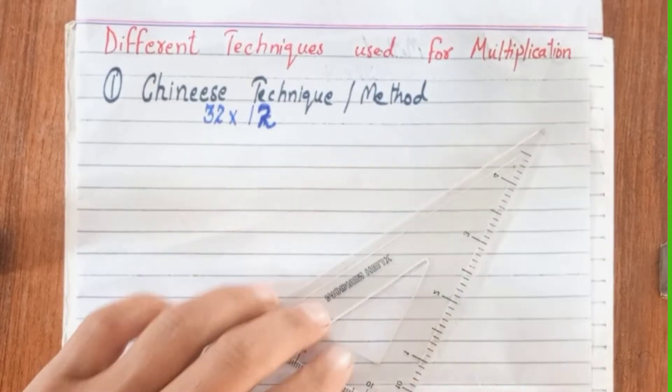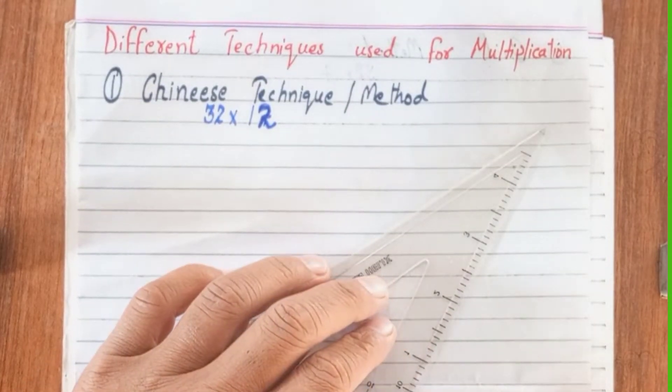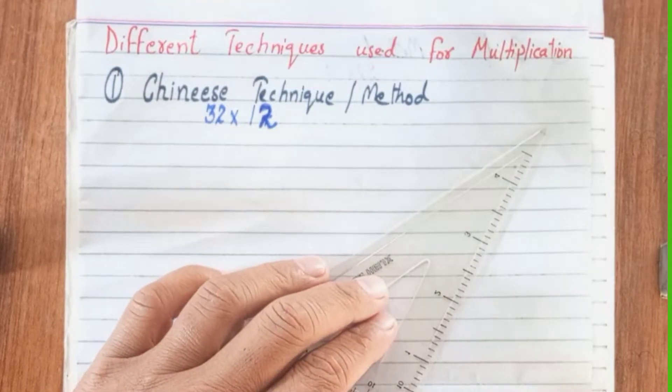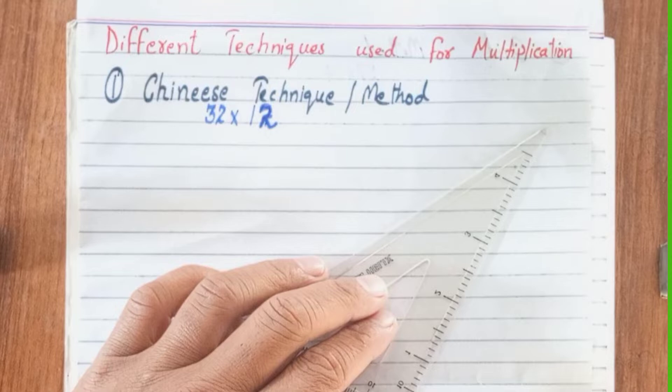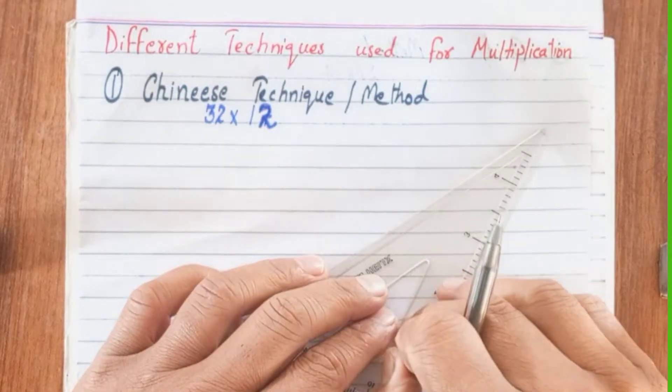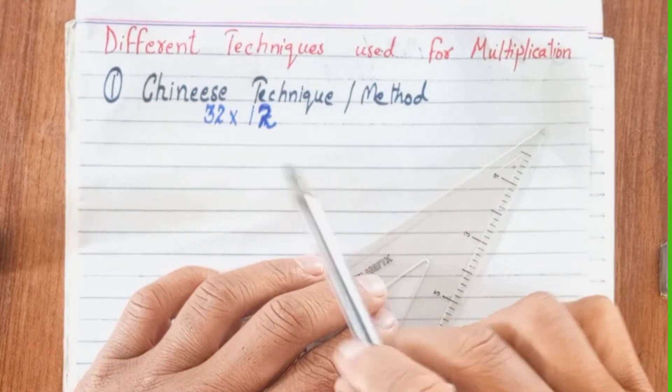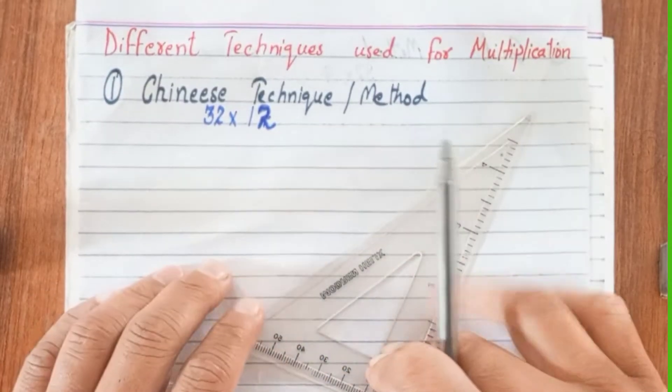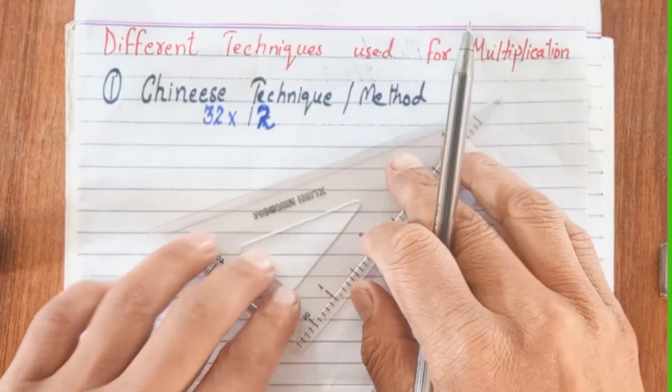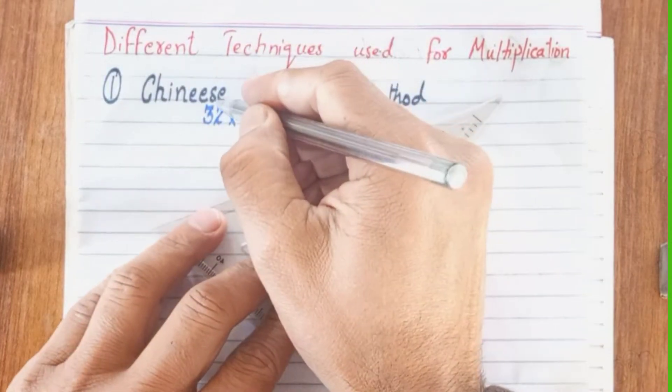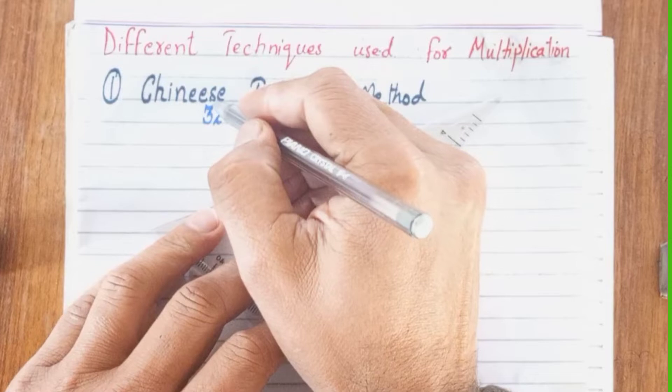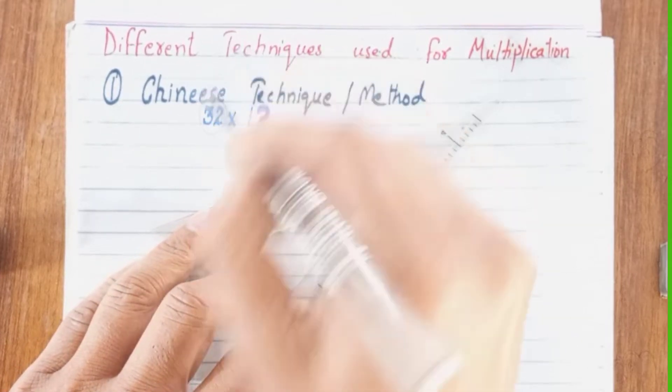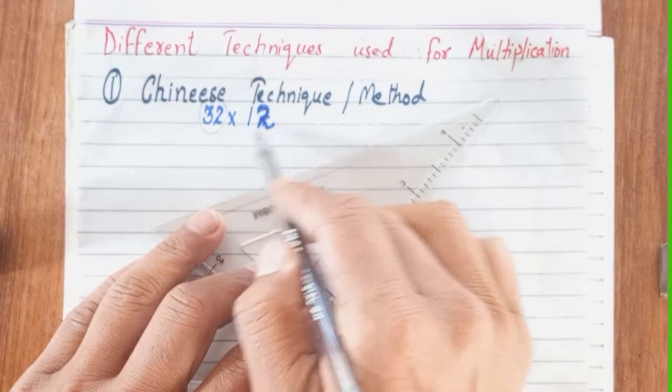Today we are going to discuss some techniques of multiplication that can be used in place of long multiplication. The first technique is the Chinese technique or Chinese method of multiplication. In this technique we will use simple lines that are used to represent numbers. For example, if we want to multiply 32 with 12...